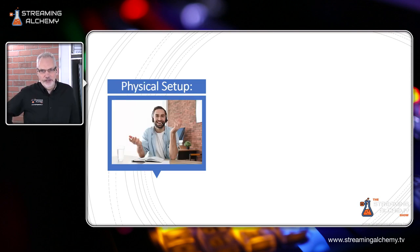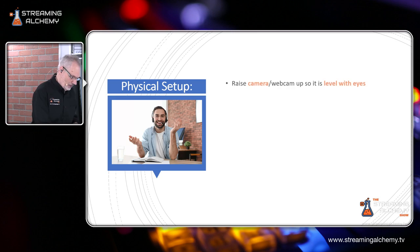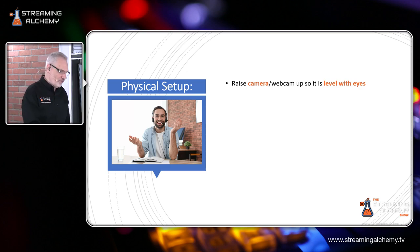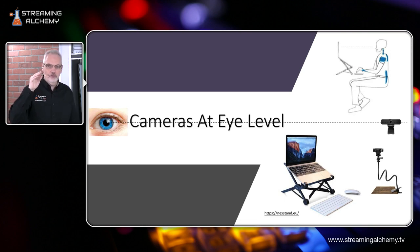The next thing I want to talk about is the physical setup — the environment around the guest and their gear. These types of things are really the next level in your production that will signal the professionalism not just of your guests but also of you for having them on your show. The first thing is to have the guest raise their camera or webcam up to eye level. A key thing when you look at any type of professional video is that you want to make eye contact with your audience and be engaged with your viewers.